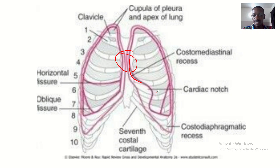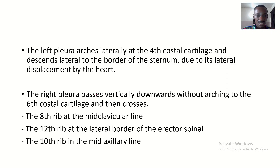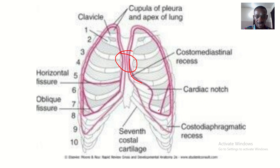The right pleura passes vertically downwards without notching. When it reaches the sixth costal cartilage, it notches. I'd like you to know the number of the cartilages on this side — when it reaches the sixth costal cartilage, it notches.